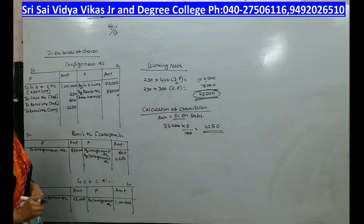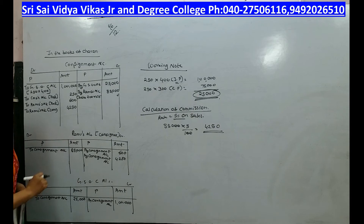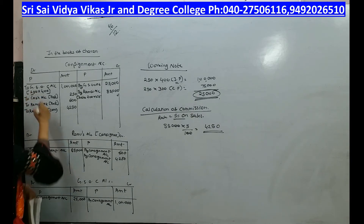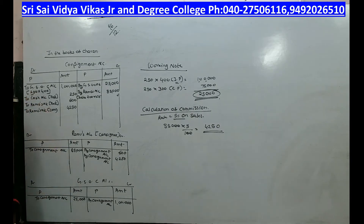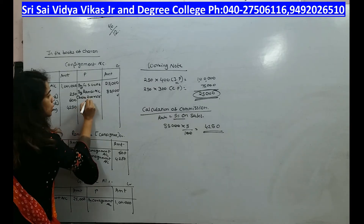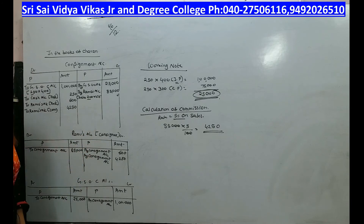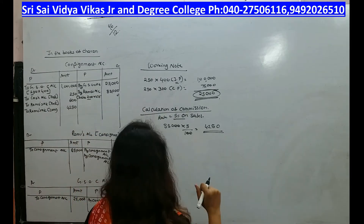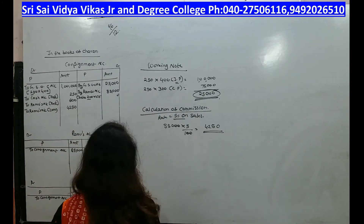We sent 250 cases to Ramu but out of 250 he sold only 200 cases. So there is unsold stock. Our next working note will be the valuation of unsold stock.